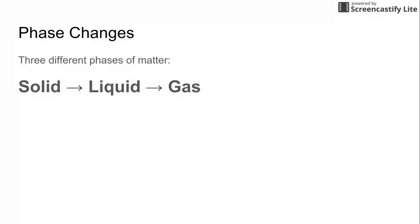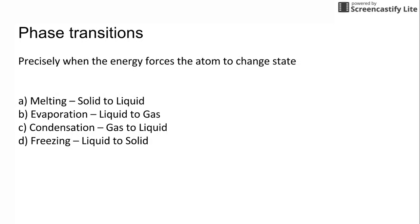Let's move on to talk about something we talked about recently called phase changes. There's three different phases of matter. There's solid, liquid, and gas. And there's also something called a phase transition, and this is when the energy forces of the atom start to change its actual state. So if you're going from a solid to a liquid, you have a period, or this transition period of melting. If you're going from a liquid to a gas, you're going through evaporation. If you're going from a gas to a liquid, it's condensation. And if you're going from a liquid to a solid, it's freezing.